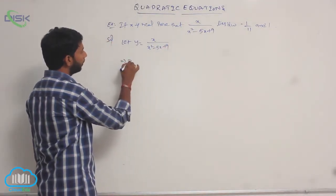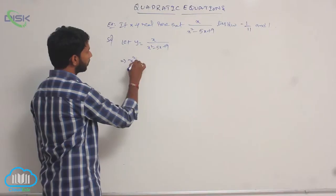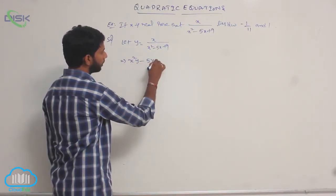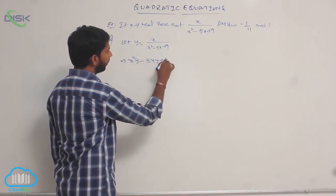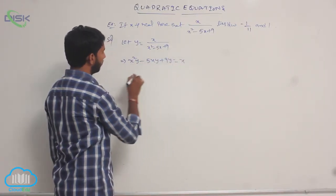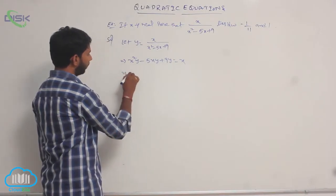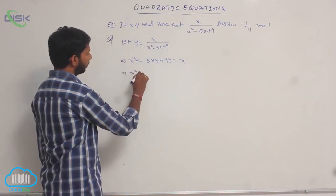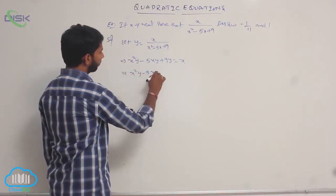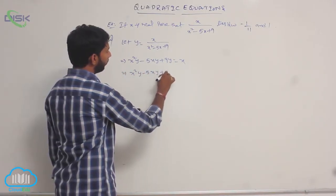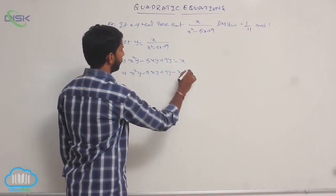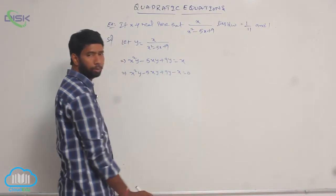Let y = f(x). Cross multiplying the terms: x²y - 5xy + 9y = x, that is x²y - 5xy + 9y - x = 0.